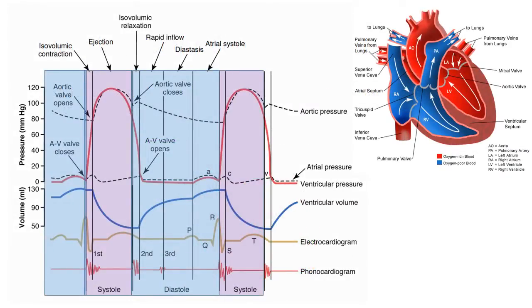For the duration of my presentation, I will be going over the Wigger's diagram, which is a graphical representation of the cardiac cycle. In this image, ventricular systole is highlighted in purple and ventricular diastole in blue, which corresponds to the ventricular volume line here in blue.